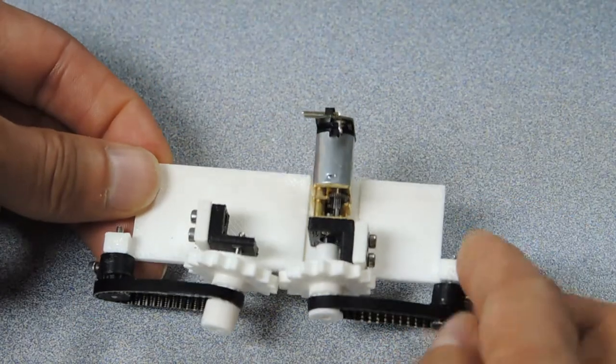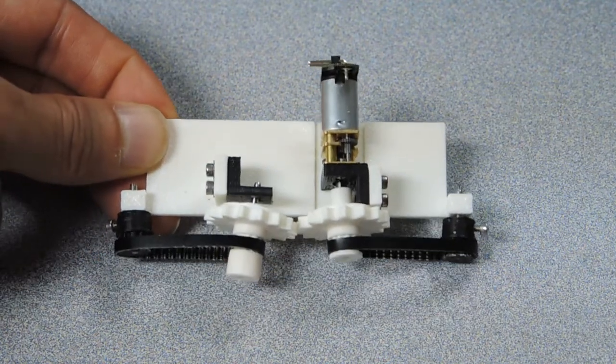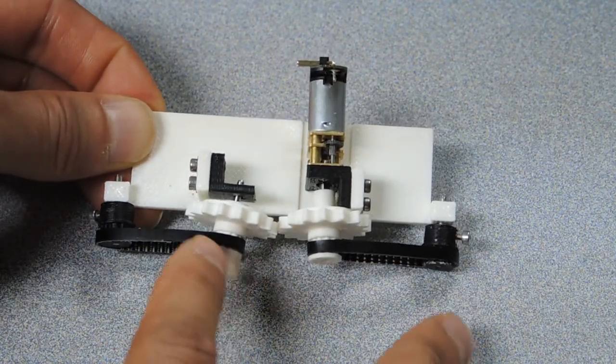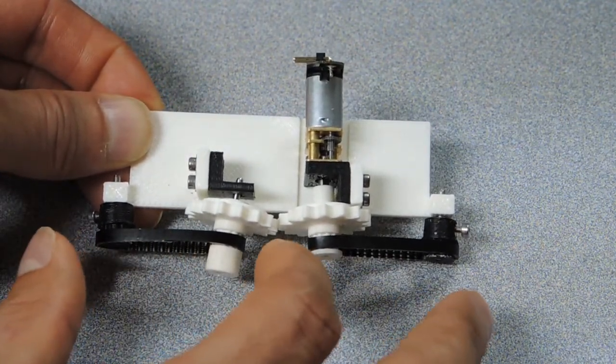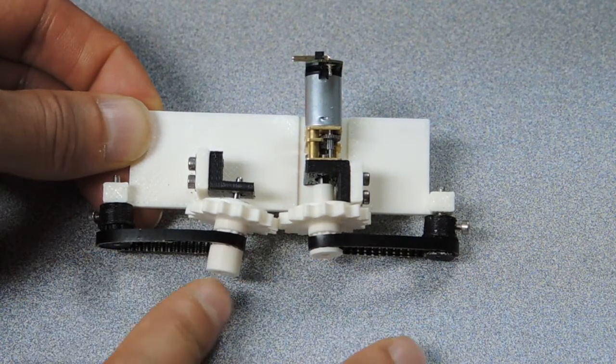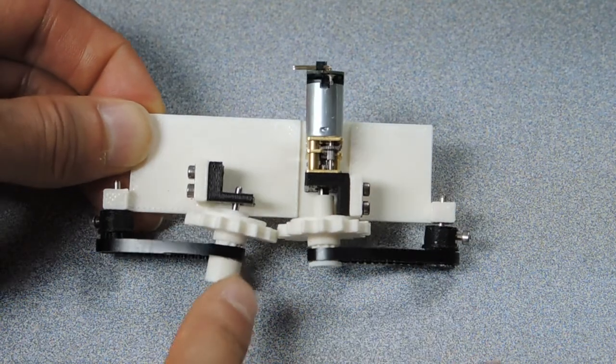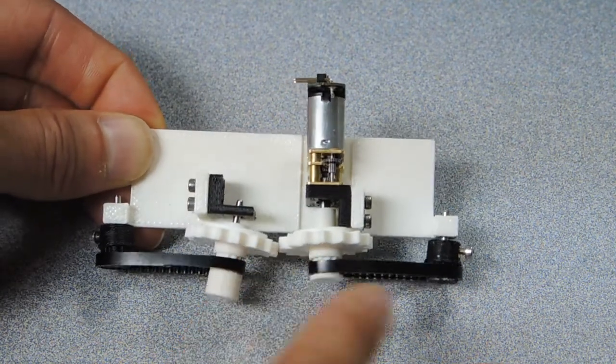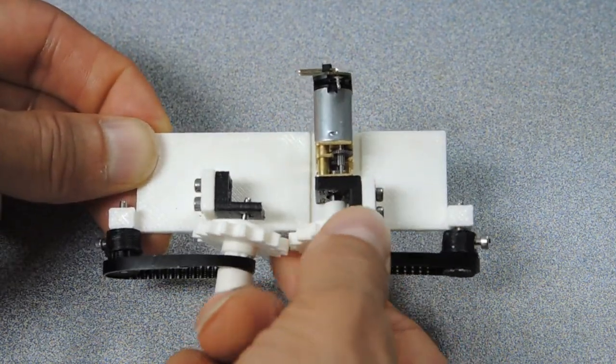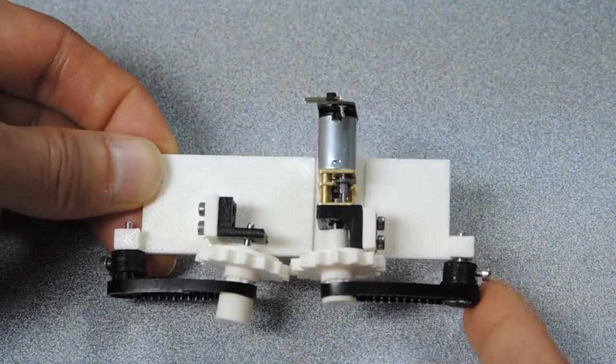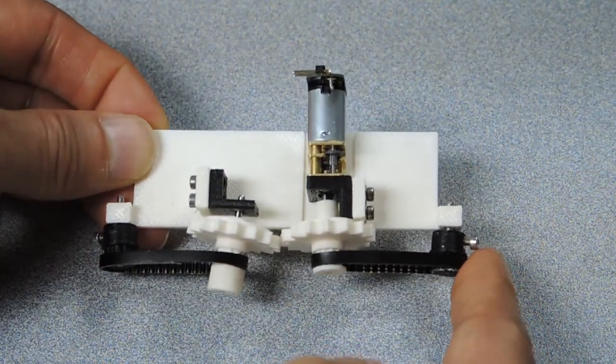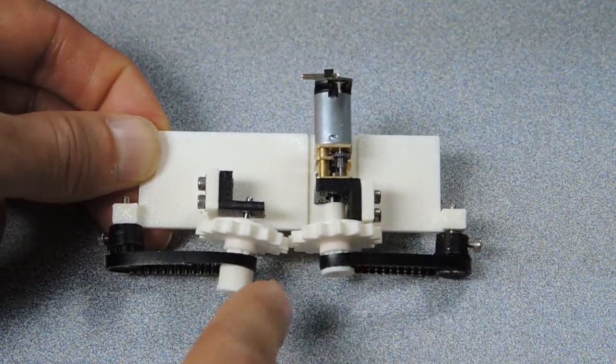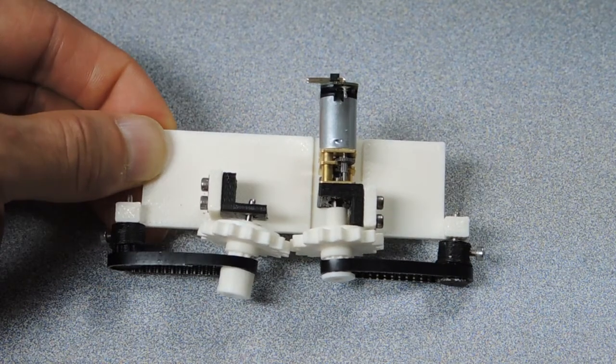But right off the bat, you can see there's one big problem with this particular setup. And that is that when the belts are tensioned, the pulleys get pulled inward, because there's nothing supporting them on this end. And for the pulley slash gears in the center, that means the gears don't mesh up very well. So this calls for some design iteration, because I think we can fix that by supporting it on this end.